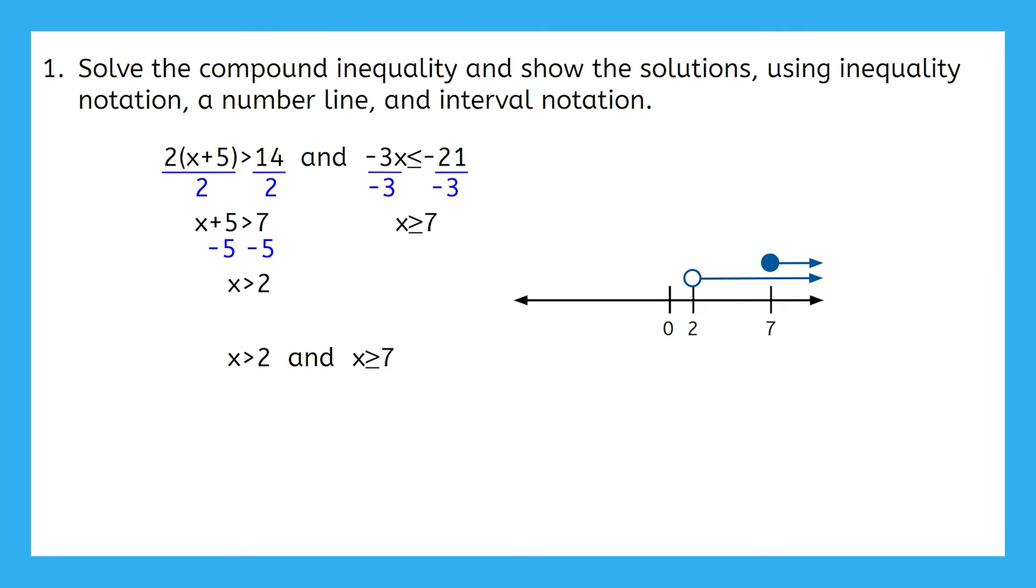Remember that our compound inequality used the word AND. So does that mean I'm looking for solutions that work in both inequalities? Or is it okay if it only works in one of them? Yeah, the solutions to the compound inequality need to work in both individual inequalities. So where are both inequalities true? Where are both of them included on the number line? 7 works in both of them, and so does anything larger than 7. We can either do a little erasing or draw a new number line to show the solutions for the compound inequality. Since the solutions will be where the overlap is, we are left with this.